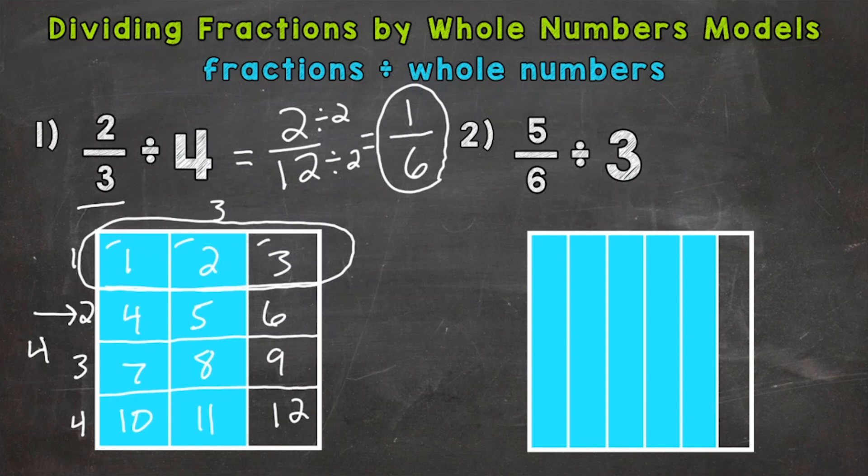So on to number two, where we have five-sixths divided by three. So here's our fraction that we start with. Now we need to divide that into three equal groups. One, two, and three there. So let's pick one of those equal groups. We'll select the top.